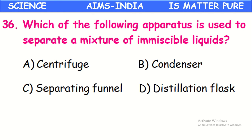Which apparatus is used to separate a mixture of two immiscible liquids? Immiscible liquids are liquids that do not mix with each other, like oil and water. The mixture of two immiscible liquids can be separated by using a separating funnel — a special instrument used for separation of two immiscible liquids.